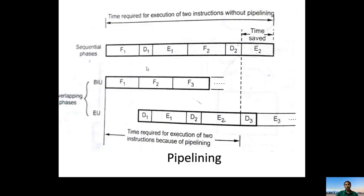In 8085, the BIU and Execution Unit do not work in parallel — when the BIU is working, the EU must be idle, and when the EU is working, the BIU is idle. For example, fetching the first instruction, then decoding it, then executing it — during decoding and execution, the BIU does no work. Only after the first instruction is fully executed does the BIU fetch the second instruction. This is the total time taken to execute two instructions in 8085, without pipelining.